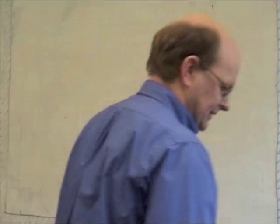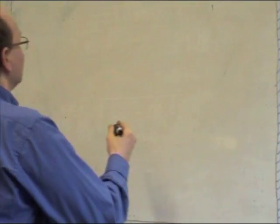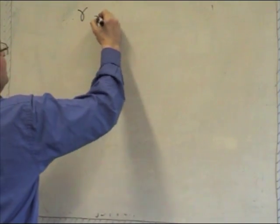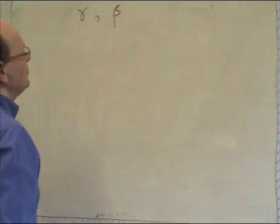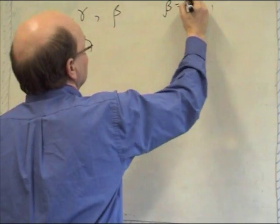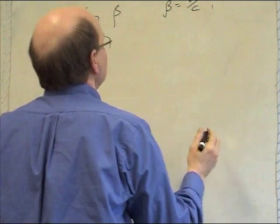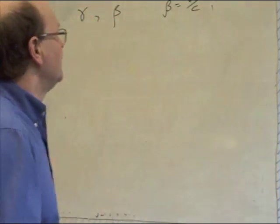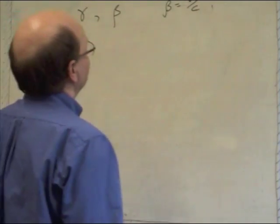So recall that earlier in the lecture I was talking about the Lorentz transformations, and I came up with these factors of gamma and beta. I haven't defined them yet in these notes. I hope you all know that beta equals v upon c, the ratio of the velocity of a particle to the speed of light, the velocity of a frame to the speed of light.